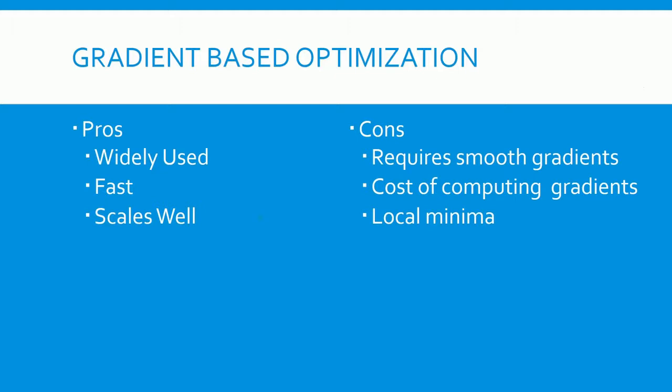Gradient-based algorithms have their own strengths and weaknesses. They are widely used, have fast performance, and scale well to large problems. However, they do require smooth continuous function gradients, and computing those gradients can be computationally expensive. Many gradient-based optimizers are also susceptible to finding local minima rather than a global optimum, meaning that they will find the bottom of the closest valley rather than the lowest point on the whole map. Gradient-based optimizers are a powerful tool, but as with any optimization problem, it takes experience and practice to know which method is the right one to use in your situation.